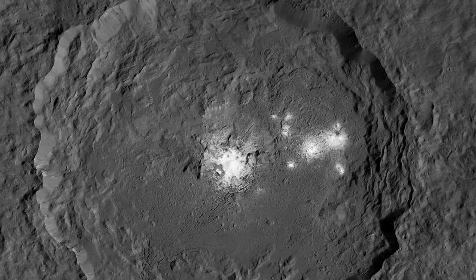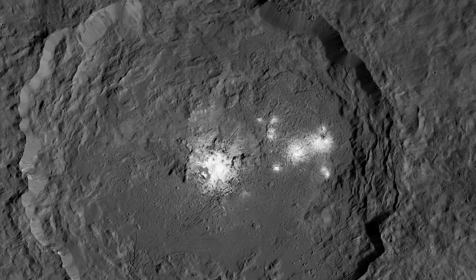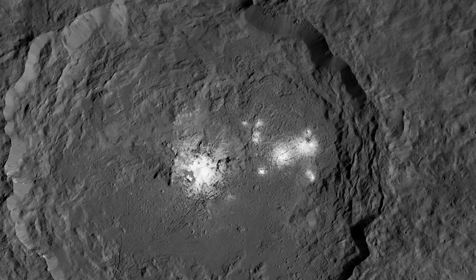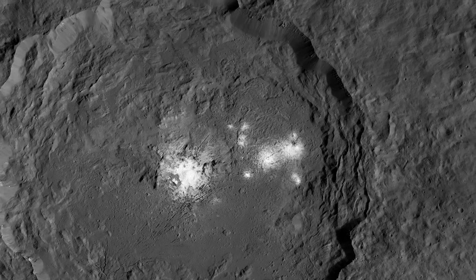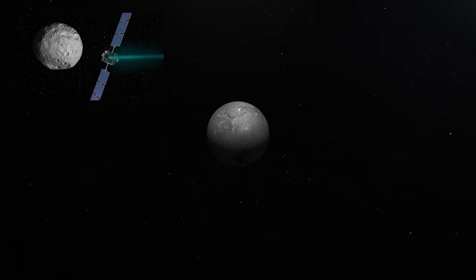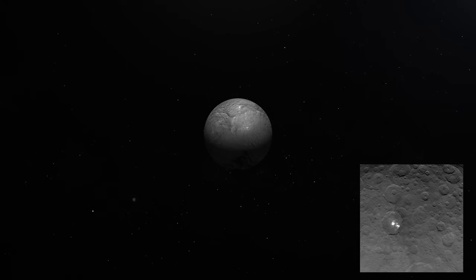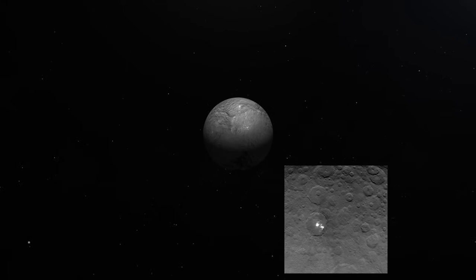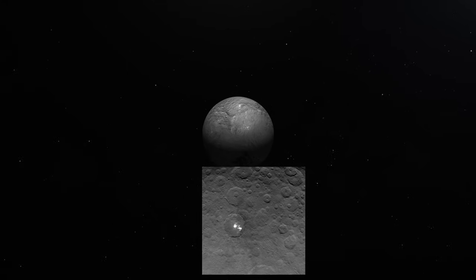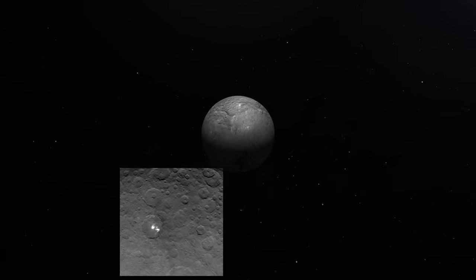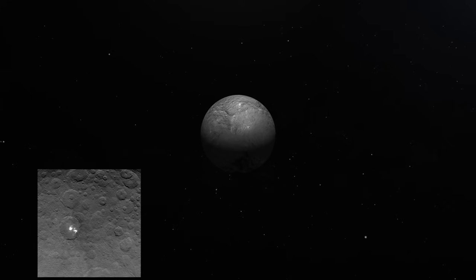Carbonate of sodium, or soda, was subsequently determined to be the chemical element responsible for the spots. Dawn entered the asteroid's orbit on March 6 and will continue observations for 16 months. During this time, a photograph was taken of a perplexing broad spot. The photographs we have of them continue to be the finest available.